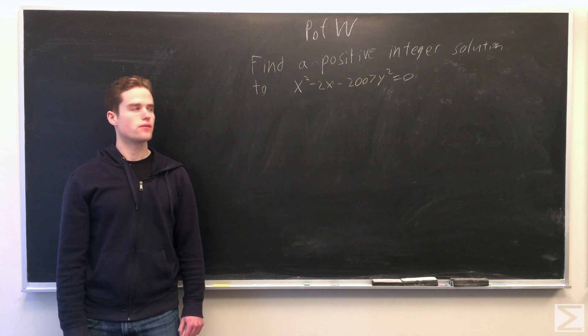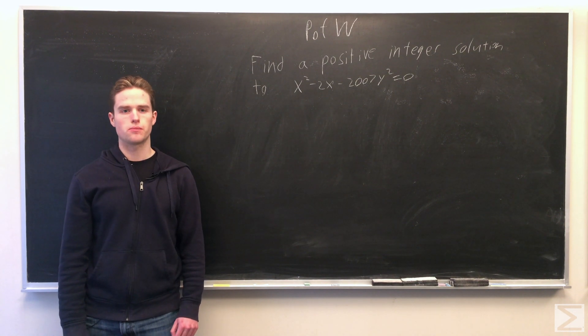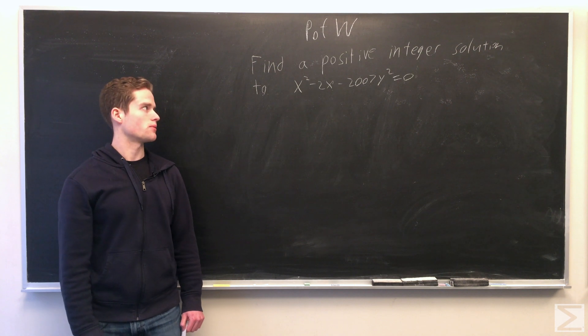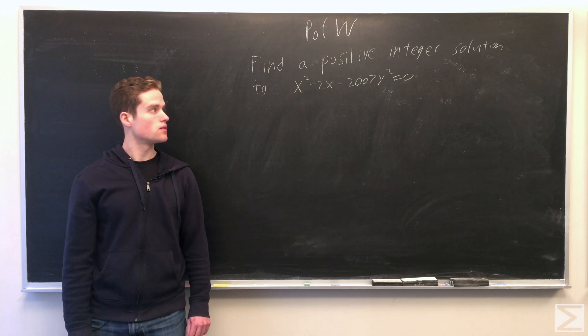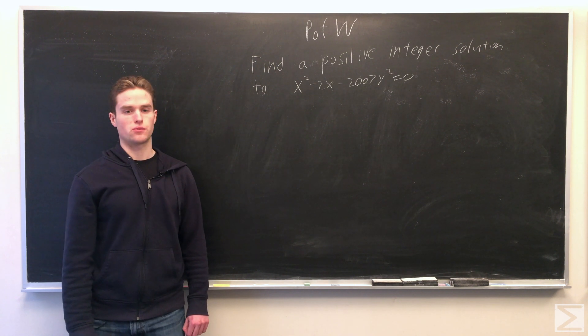Welcome to Center of Maths, Problem of the Week. For this week's problem, we want to find one positive integer solution x, y to x squared minus 2x minus 2007y squared equals 0.